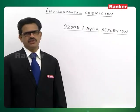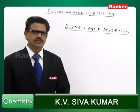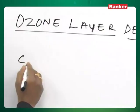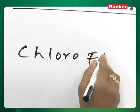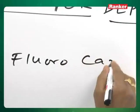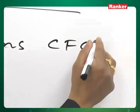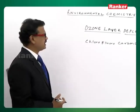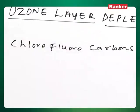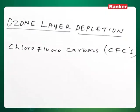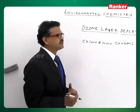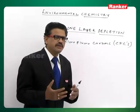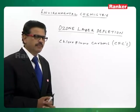Now let's move on to ozone layer depletion. Depletion means holes. The main cause for ozone layer depletion is chlorofluorocarbons, which we call CFCs. These are the main ones responsible for depletion in the ozone layer. These chlorofluorocarbons are produced in the environment, or they can be prepared — they are mainly prepared in laboratories.